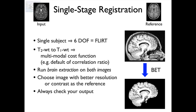We would also run brain extraction on both images. Always make sure that you're registering two images both of which are brain-extracted, or neither of which is brain-extracted. You never want one brain-extracted and one not, because the registration will not handle that well — there's a very big difference in that case and it won't be able to figure that out.